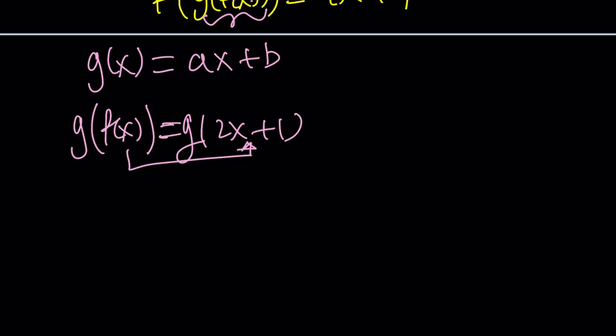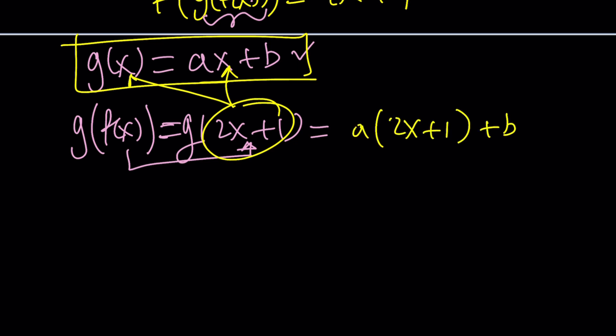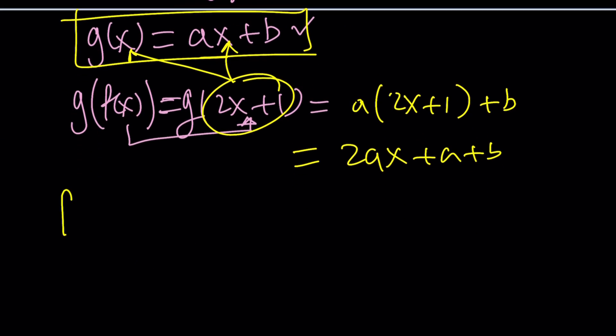So this is what we get from here, and now g(2x + 1) is known because we know g(x) is ax + b, so let's go ahead and replace it with that. If you replace x with this, here and here, g(2x + 1) is going to be a times (2x + 1) + b, or 2ax + a + b. This is g(f(x)).